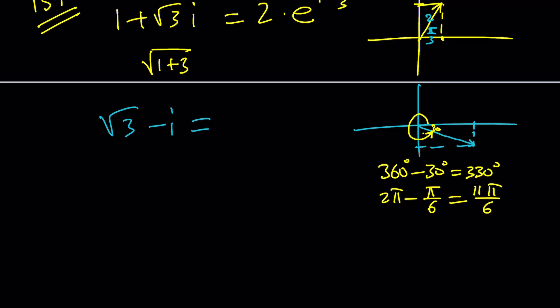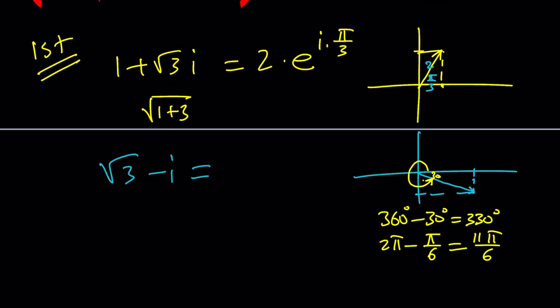So that's 11π/6 radians. And the modulus is again 2 from Pythagorean theorem. It's going to be 2 times e to the power i times 11π/6.